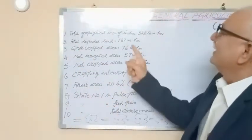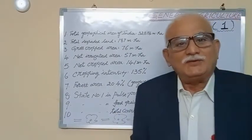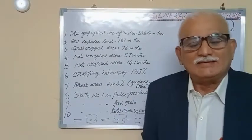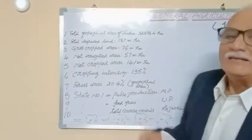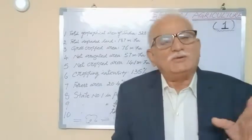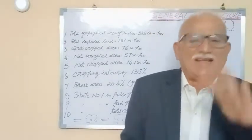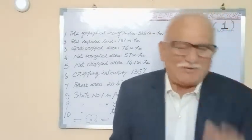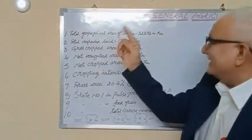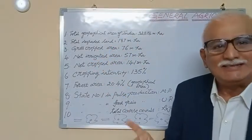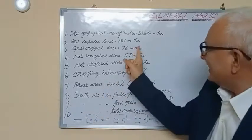The total geographical area of India is 328.74, usually written as 328 or 329 million hectares. The total degraded land is 187 million hectares.